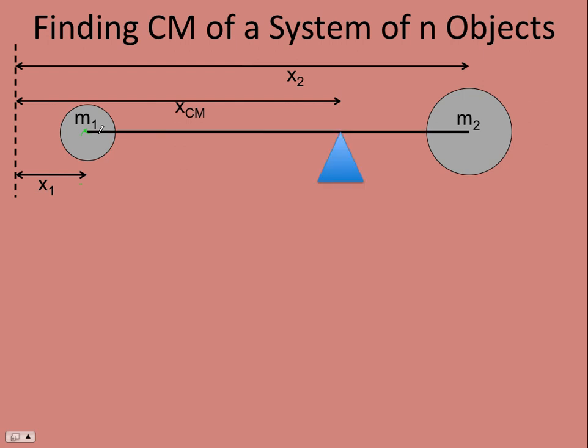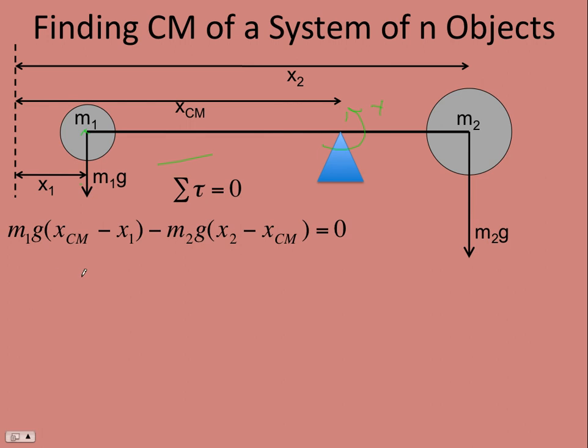And so, again, we pretend like they're playing on a seesaw, and we have forces, and we're going to sum the torques about the fulcrum, so I don't really care about the normal force, and the sum of the torques would be 0 if they're balanced. The center of mass is where they would balance. And what's different now is the lever arm for M1 is this distance, and you can see that's x center of mass minus x1, and then this is the same as what we saw before. This would be this lever arm, and so it's x2 minus x center of mass.